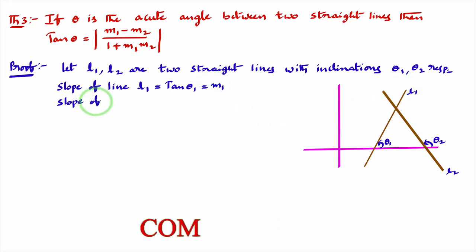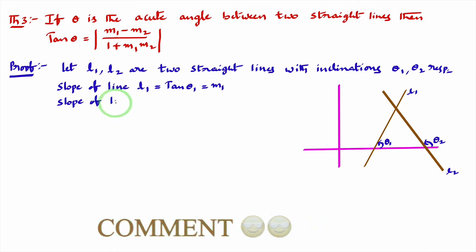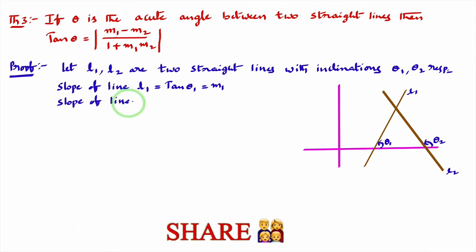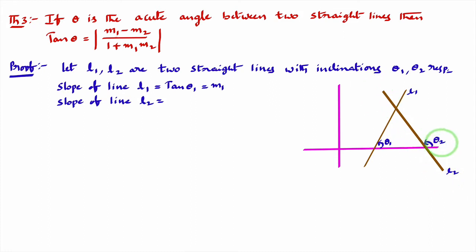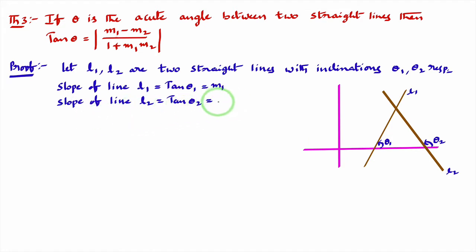Similarly, the slope of line l2 is tan theta2. The inclination of line l2 is theta2, so the slope of line l2 is tan theta2, which I'll consider as m2.